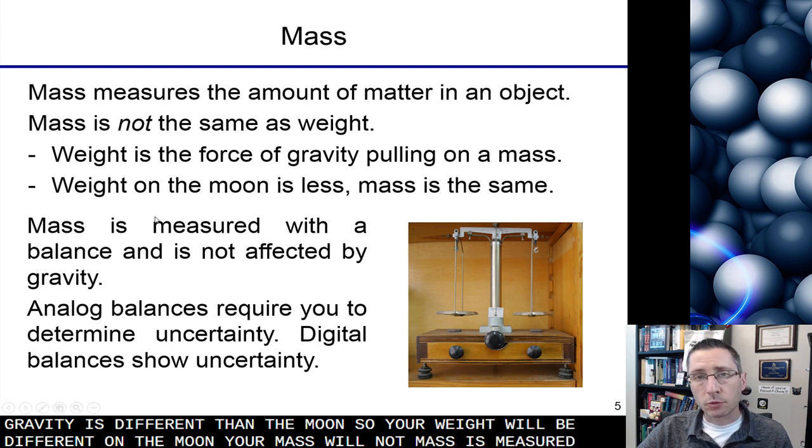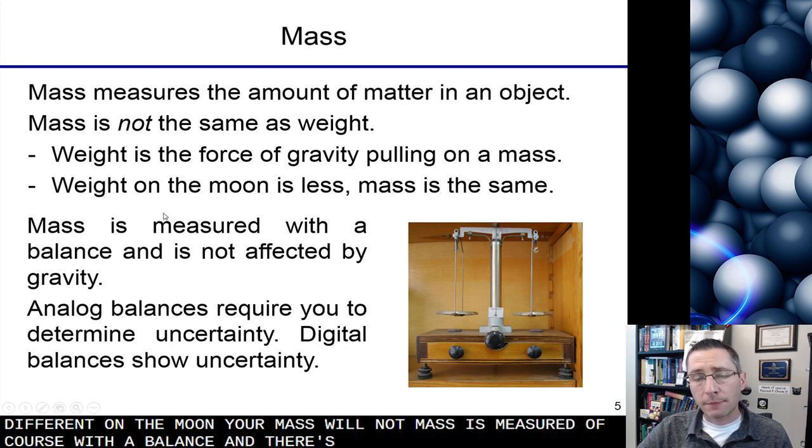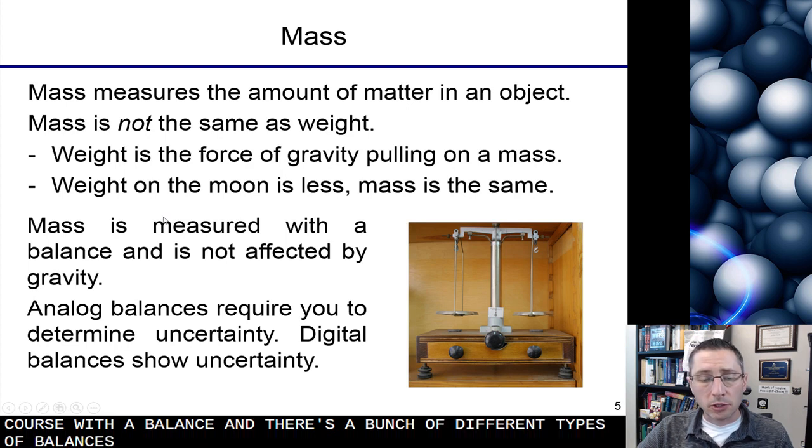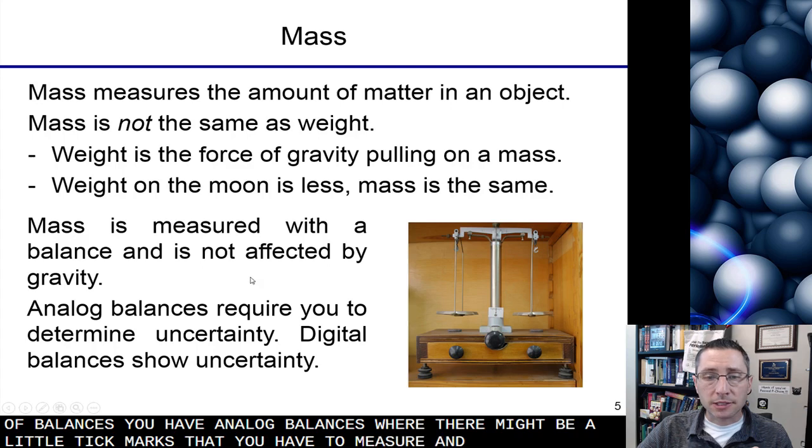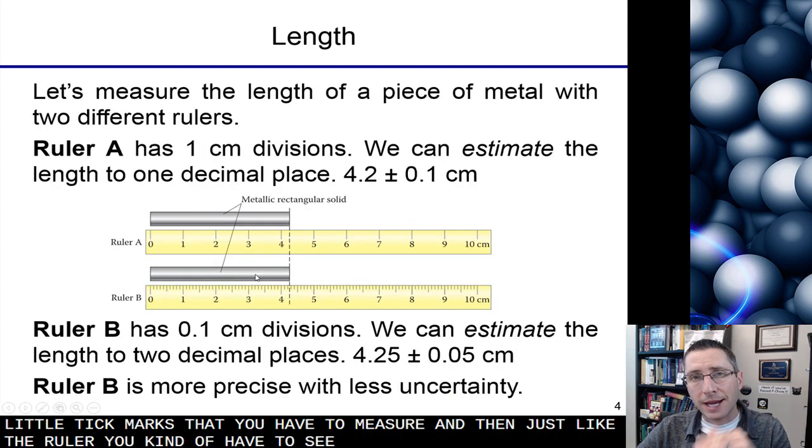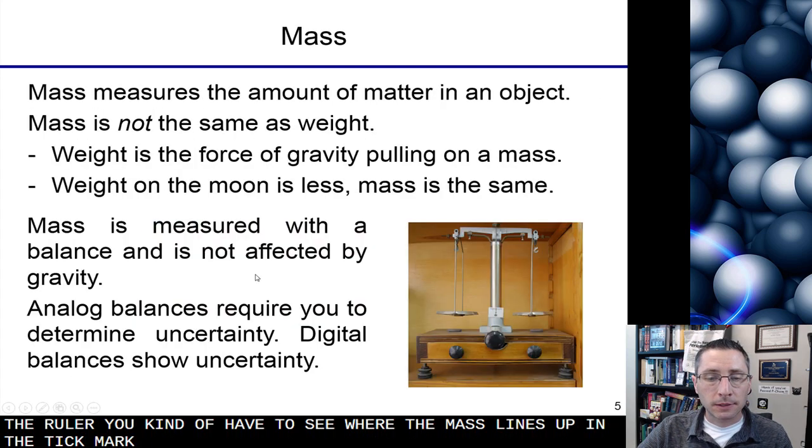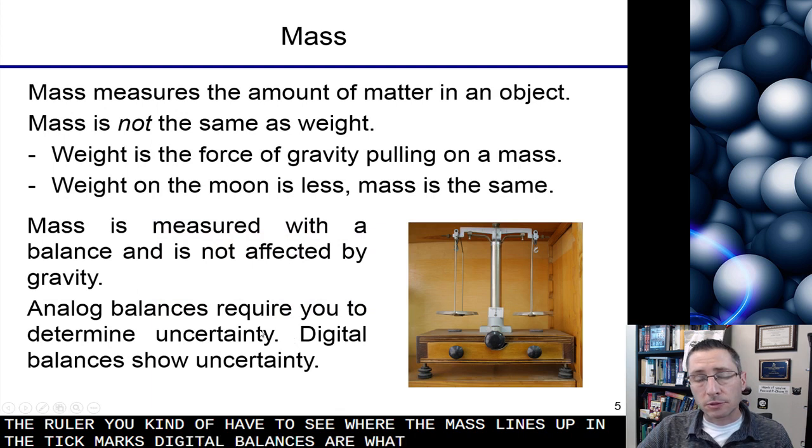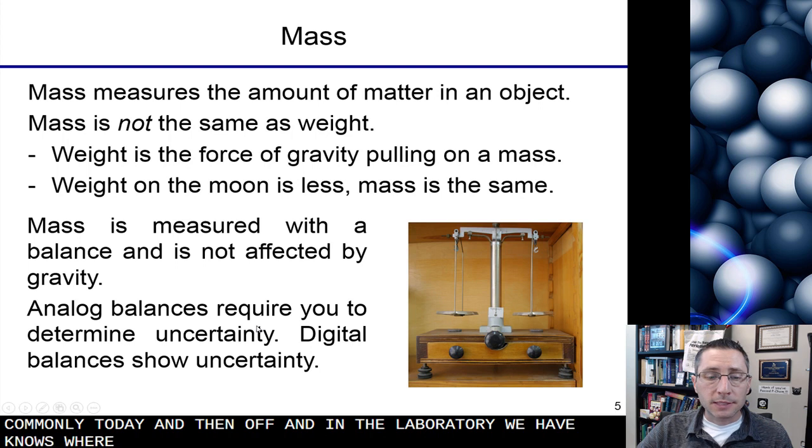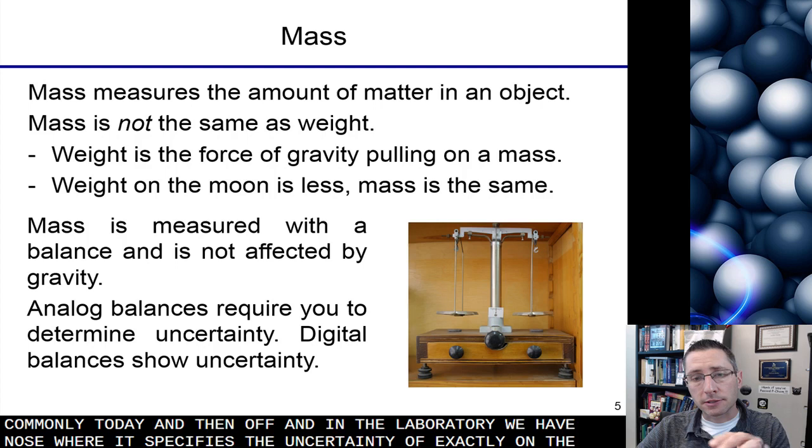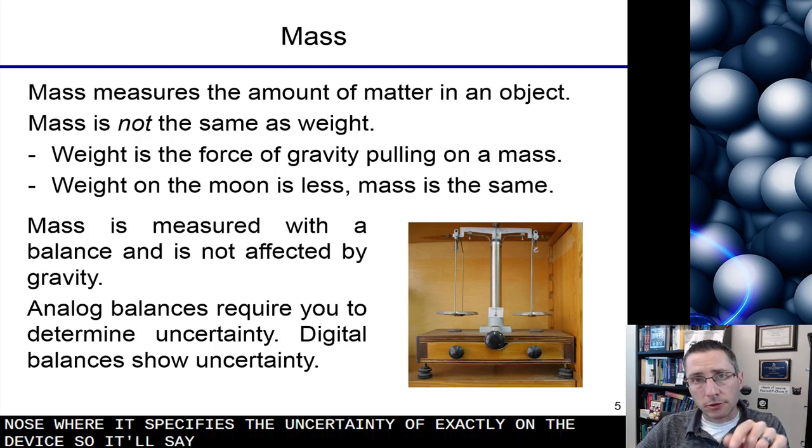Mass is measured, of course, with a balance, and there's a bunch of different types of balances. You have analog balances, where there might be little tick marks that you have to measure, and then just like the ruler, you kind of have to see where the mass lines up in those tick marks. Digital balances are what's used probably most commonly today, and often in the laboratory we have those where it specifies the uncertainty exactly on the device. So it'll say 0.005 with some uncertainty.